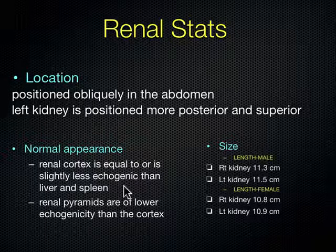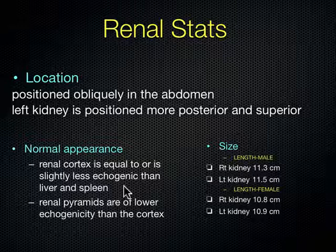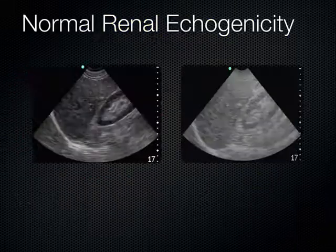Kidney sizes differ slightly between males and females — about half a centimeter bigger in males. The right kidney is actually smaller than the left. In males, the right kidney is about 11.3 centimeters, while the left is 11.5 centimeters. The same pattern holds in females. Why is the left kidney bigger? The aorta travels down the left side of the spine, so the left kidney is closer to the aorta and gets a more direct blood supply, making it slightly larger over time.